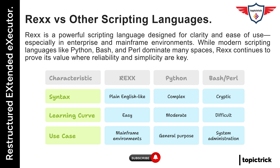Then there's Bash. It's great for quick system tasks, but it can get cryptic fast, especially with nested loops, quotes, and escaping characters. And let's not even talk about how tricky it can be to debug. Rex is much more forgiving in that sense — you write what you want the machine to do, and it does it, with minimal fuss.